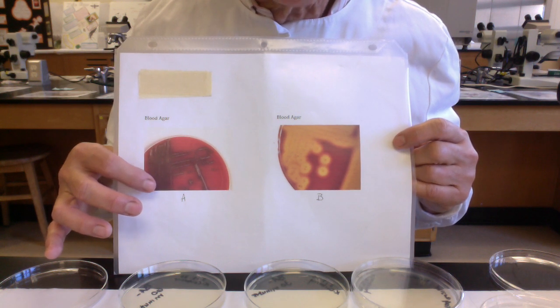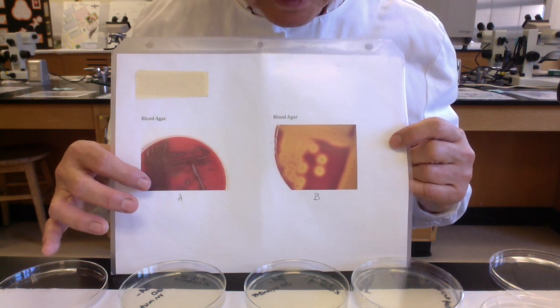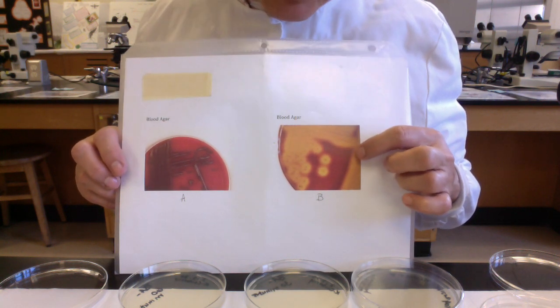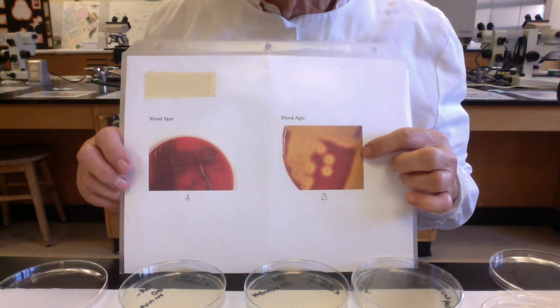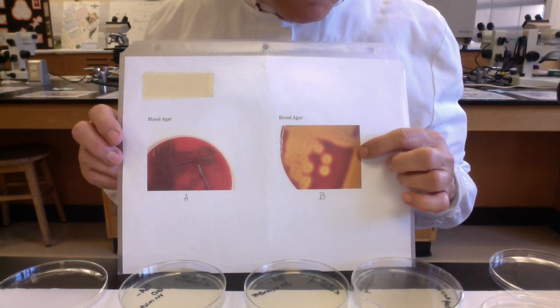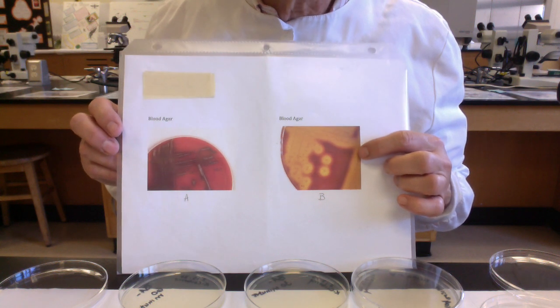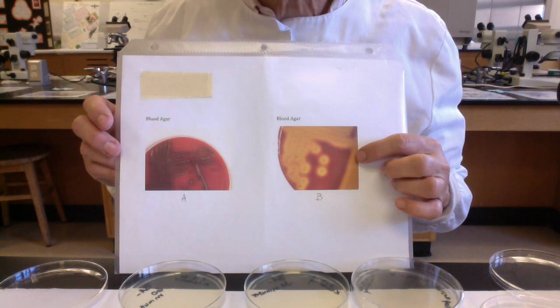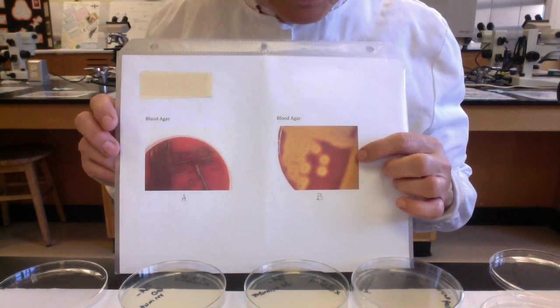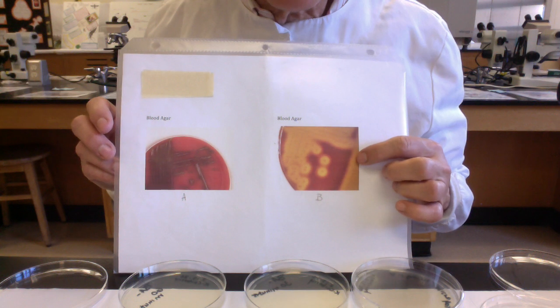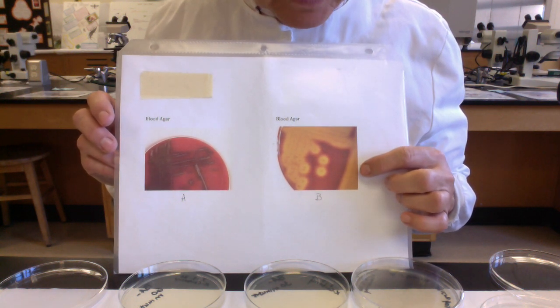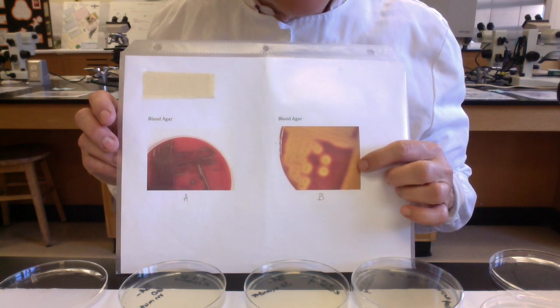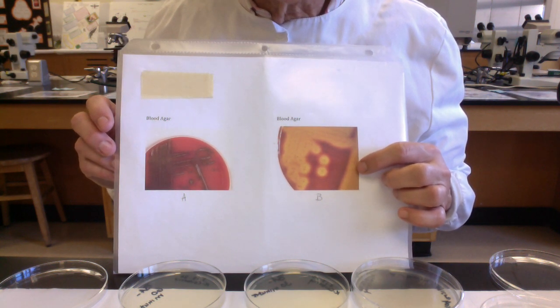Over here we have beta hemolysis. So just as an example, folks, maybe if this was pus from an infected surgical site and we plated it and we see beta hemolysis, we're really worried about it could be Staphylococcus aureus. If somebody has a sore throat, we do a throat swab, plated it, and we see beta hemolysis, we're going to be thinking about Streptococcus pyogenes, the group A streptococcus. If this is a pregnant mom and we do a vaginal swab and plate it on blood agar, and after incubation we see beta hemolytic colonies, we're going to be really worried about group B strep, the Streptococcus agalactiae.